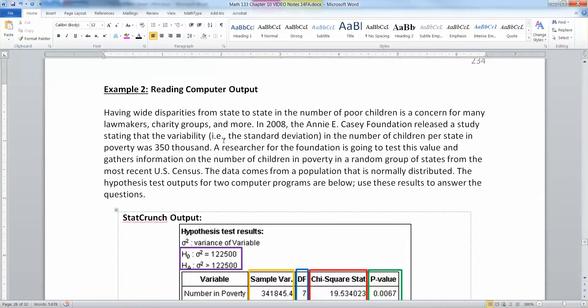Having wide disparities from state to state in the number of poor children is a concern for many lawmakers, charity groups, and more. In 2008, the Annie E. Casey Foundation released a study stating that the variability, in other words the standard deviation, because that's what standard deviation is a measure of, variability, in the number of children per state in poverty was 350,000.